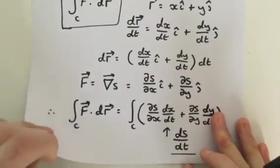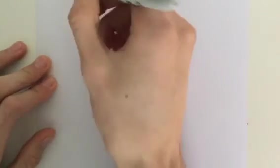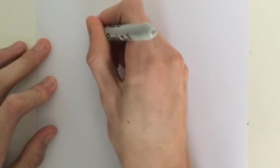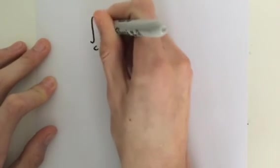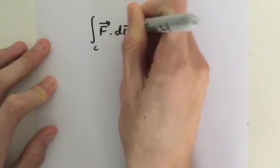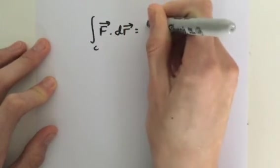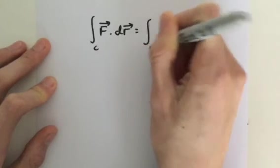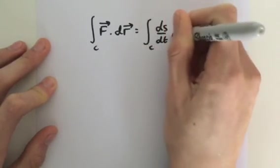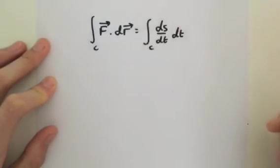So we're not finished yet. Let's just sum up what we've just done. So we had the line integral of our curve C, F dot dr. We found this was equal to the integral of C of dS by dt dt.